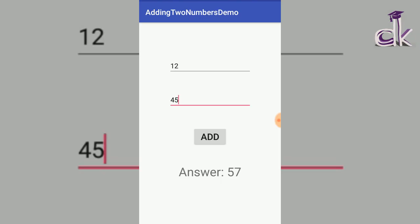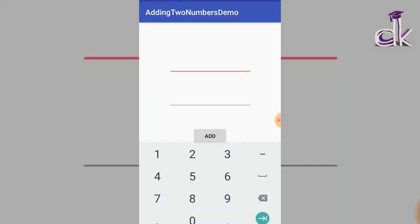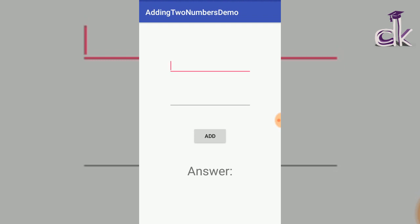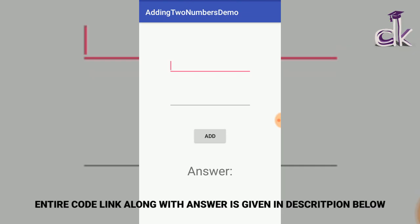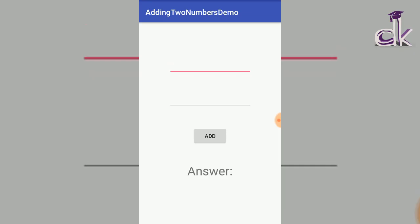You can similarly change the operation to subtract or make other layout changes. One important thing: if you leave the first field empty and enter a number in the second and click Add, the app will crash because we have not added any error handling. Make sure you try to solve this — the clue is to check if the length of each EditText is zero before allowing the button click. Try this homework as it will help you learn much quicker.